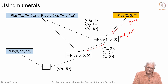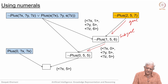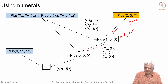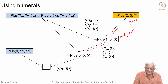Let us take a break here. We will address the second query in the next video. The second query is an existential query — is there something x such that Plus(2, 5, x) is true, meaning is there an x such that 2 + 5 = x? We will do that in the next one.